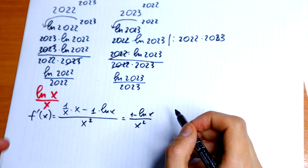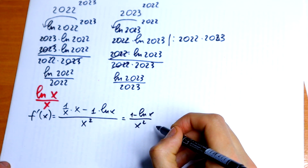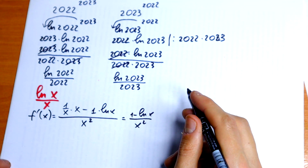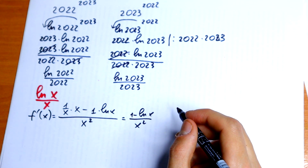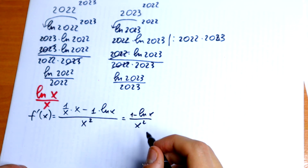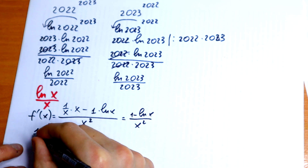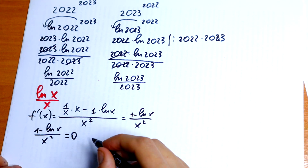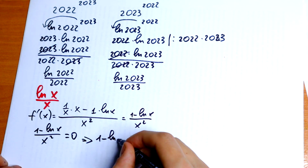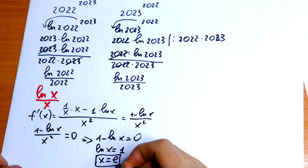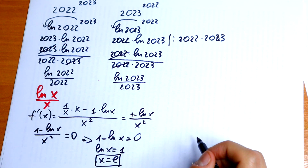We just need to set our derivative equal to zero to find critical points. So 1 minus natural log of x, all over x squared, equals 0. This means 1 minus natural log of x equals 0, so natural log of x equals 1, which gives x equals e. This is the solution to our derivative equation.